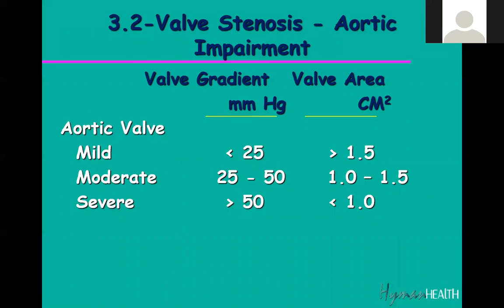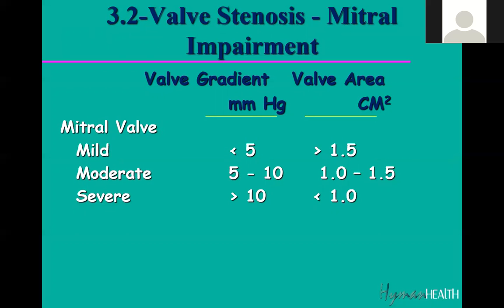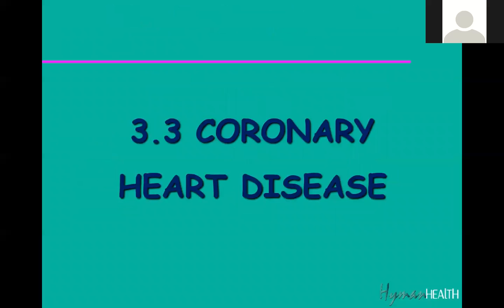Take the aortic valve — someone comes in with chest pain and shortness of breath. How do you look at the valves of the heart? By doing an echo. You won't get this from a regular stress test — you'll miss it. The cause of their symptoms may be the valve. You put the transducer on the chest, bounce the sound waves, and look at the aortic valve. Same for the mitral valve — the echo allows you to examine the anatomy. That's one of its big advantages.